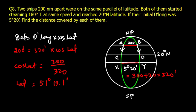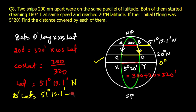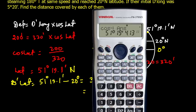Now we need to be careful. The initial latitude is 51°19.1'N, and the vessels steamed south to reach 20°N. So D.Lat = 51°19.1' − 20° = 31°19.1' South, because the vessel is traveling in the southerly direction.